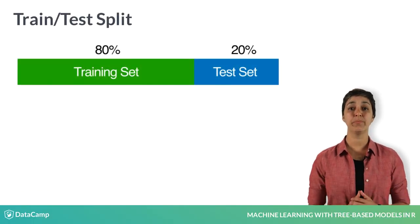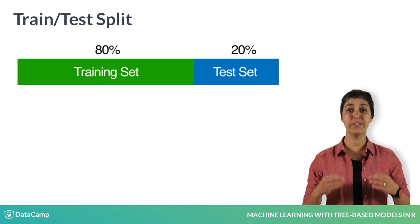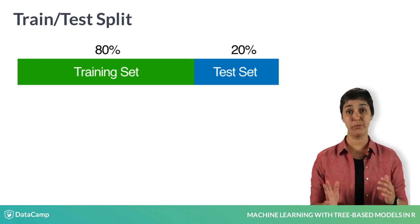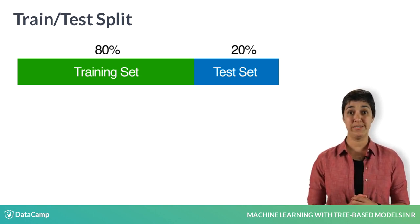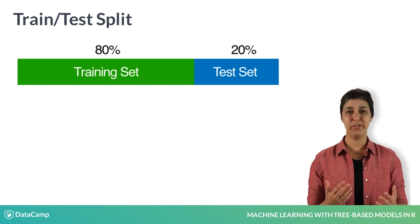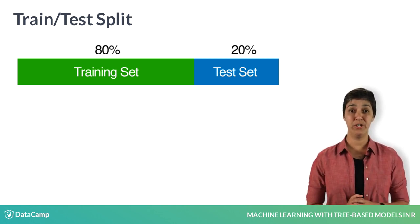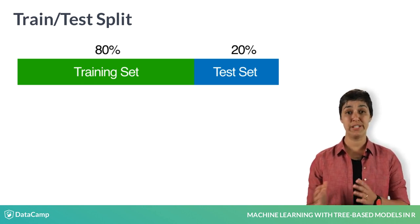So far, you use the whole dataset to train your model, but this will most likely lead to a result that is too optimistic. One alternative is to split the data into two pieces. The first part, the so-called training set, can be used for building the model. And the second part, the test set, can be used to test the results. One common way of doing this is to use 80% of the data for a training set and 20% of the data for the test set.